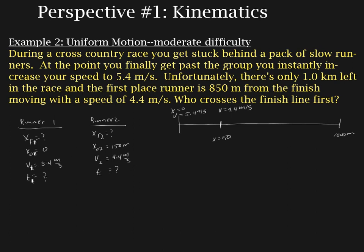The best approach is to figure out where they cross paths. You could calculate how long it takes runner 1 to go from his position to 1000 meters, or calculate the time it takes runner 2 to go from 150 to 1000. Or we could figure out where they cross paths — where on this number line that happens. Are they going to cross paths on this side of the finish line or on the other side? That's the approach I'm going to take.